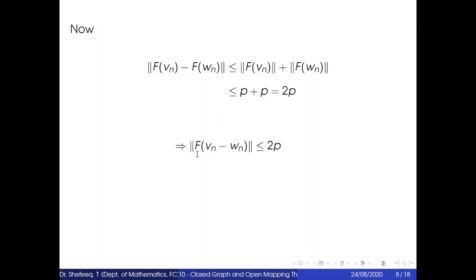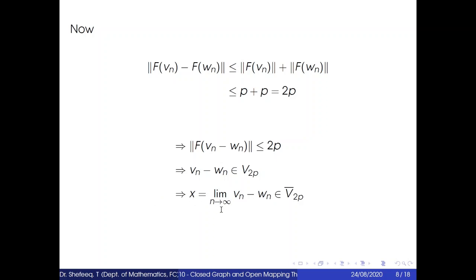This implies the norm of f(vn − wn) is less than or equal to 2p, so vn − wn belongs to V₂p. Therefore x = lim(n→∞) (vn − wn), which belongs to V̄₂p. So x belongs to V̄₂p.